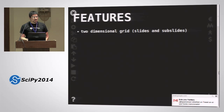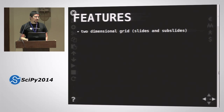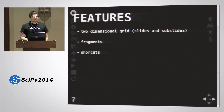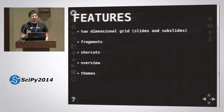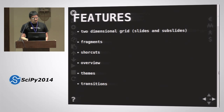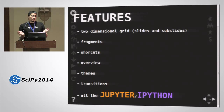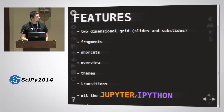Some features: the 2D grid, essentially listing some of the Reveal.js features. We have fragments, shortcuts, overview mode, and themes. In fact, I am using a theme here because the default theme is the white one, similar to the notebook, but I like to customize my notebooks and slideshows. Transitions and all that — everything you can have in the notebook is a feature here too.